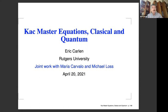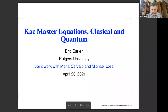The papers involved are all on the archive. There's a recent paper by myself, Maria Carvalho, and Michael Loss that just came out in the Annals of Probability, which has some of the latest work on the classical model. There's also a paper by the same authors on the archive, just appeared in Advances in Mathematics, on the quantum Katz model.